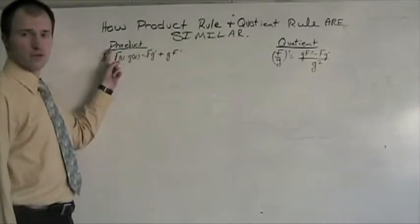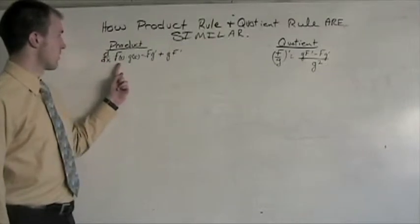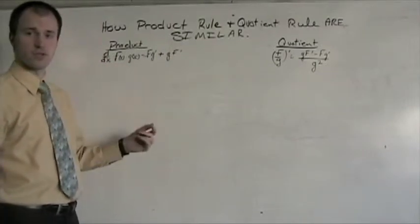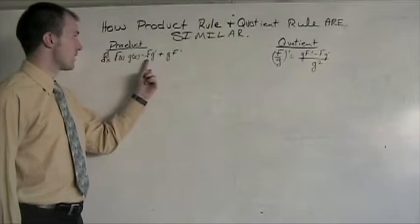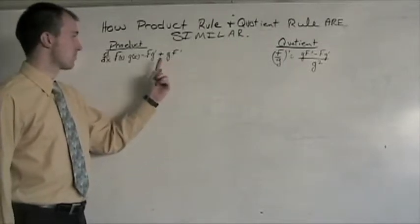To refresh ourselves, let's look at product rule. Product rule is d/dx of f(x) times g(x), two functions being multiplied together, and that's going to be f times g prime plus g times f prime.